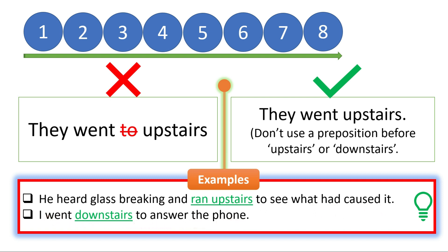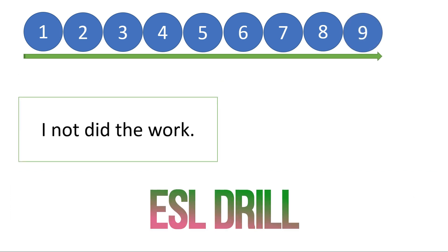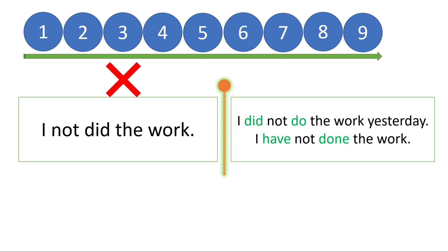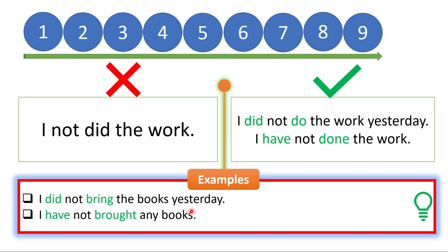Mistake number nine: 'I not did the work' — this is wrong. The correct way depends on whether you mention a time reference. 'I did not do the work yesterday' — here I mentioned a time reference word 'yesterday,' a past adverb, so I use simple past tense. If I haven't mentioned any time, I say 'I have not done the work' — present perfect. Examples: 'I did not bring the books yesterday.' 'I have not brought any books.' Use simple past tense with a time reference adverb; otherwise use present perfect, or base it on the question being asked.